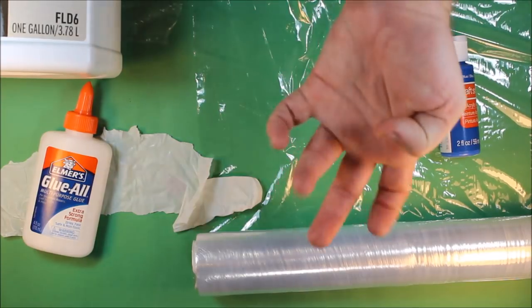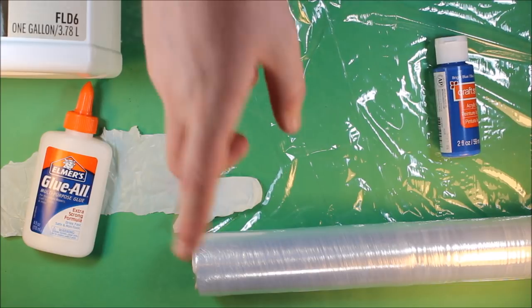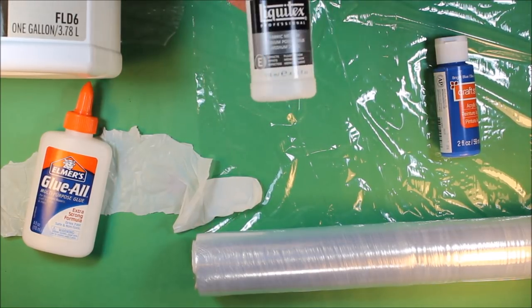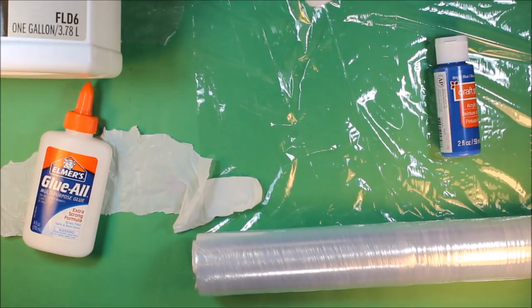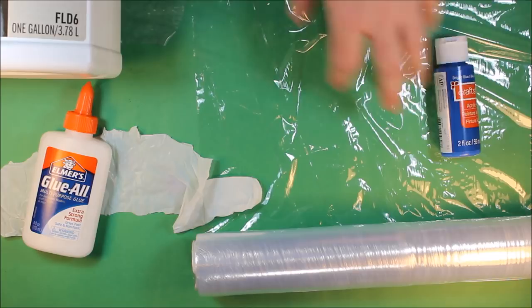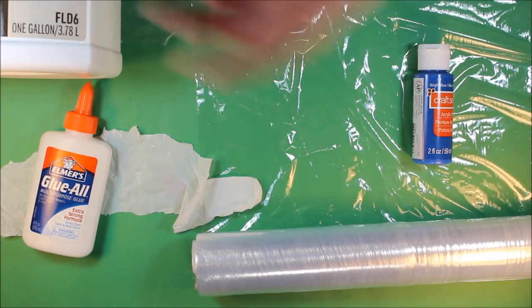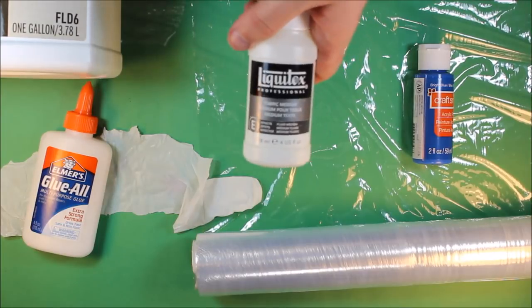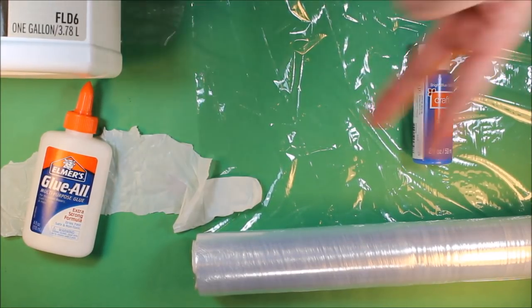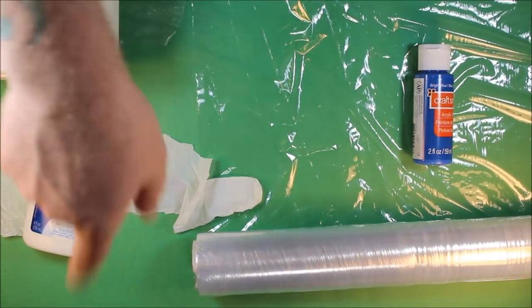We have vinyl and latex as extenders. Liquitex pouring mediums work more similar to an emulsifier, something that's already present in the acrylic paints, which is why you use less of it. The pros and cons—of course Liquitex is expensive to do a lot of pours because you have to use more paint and they don't sell big bottles.